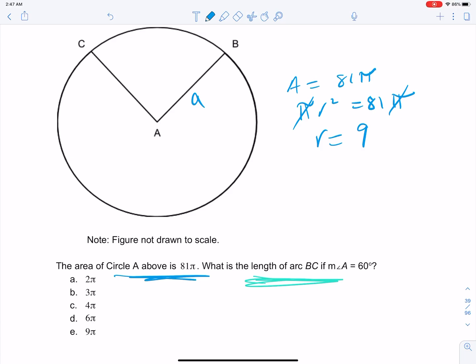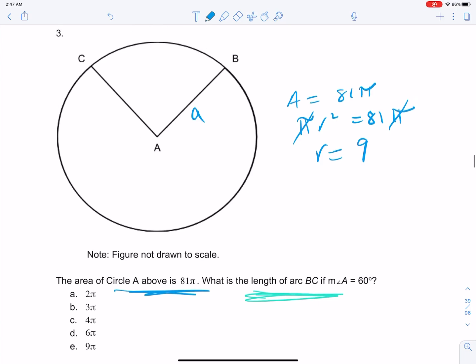Now, what is the length of arc BC? So we want this arc here, and remember arc is a portion of the crust. Crust is circumference, so circumference is 2 pi r. In this case the radius is 9, so it's 18 pi.